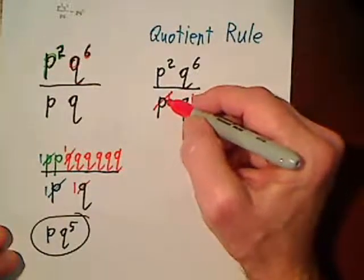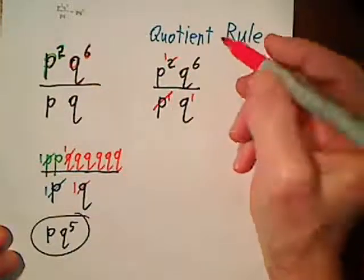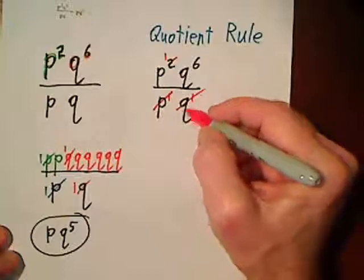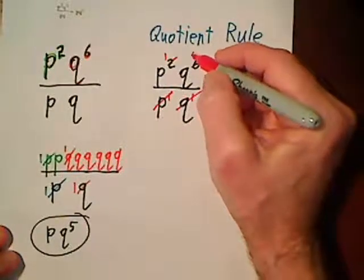these will cancel out, two minus one leaves us with one. This will cancel out, six minus one leaves us with five.